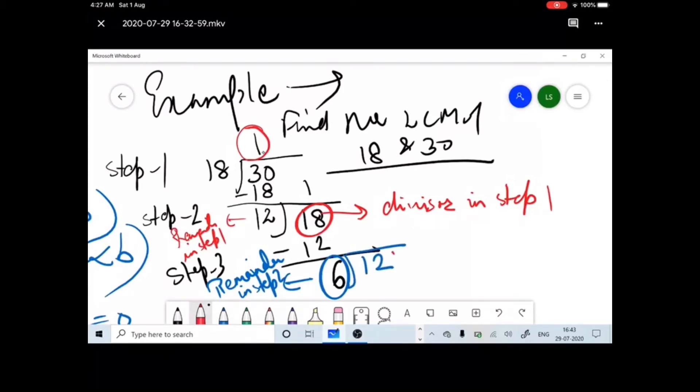Now, 12 is what over here? 12 is the divisor in step 2. So here this becomes your divisor in step 2. Okay, now same thing we will do. 6 twos are 12, wherein when you divide it, you get answer as 0.